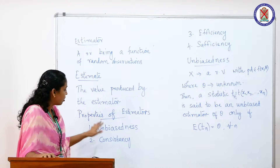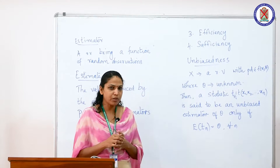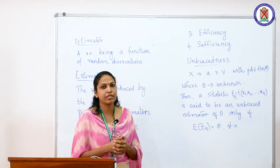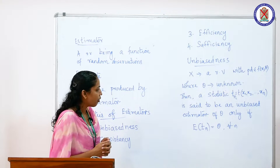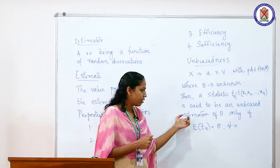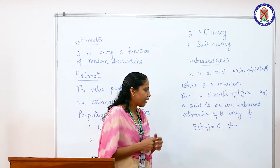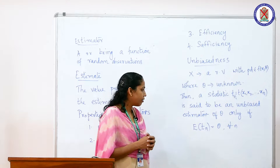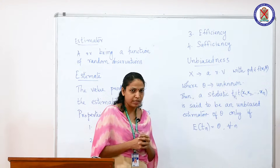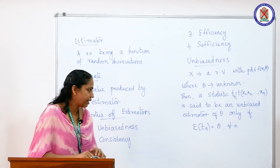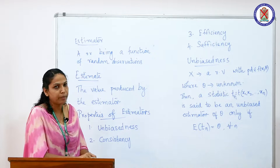Let us first talk about the unbiasedness property. Unbiasedness property says that suppose we have a statistic — a statistic which is a function of the sample values. A statistic is said to be unbiased for a particular parameter theta, if it has a PDF f(x, theta), and only if it satisfies the property that expectation of Tn is equal to theta for all values of n. We say that Tn, which is a statistic, is an unbiased estimator of the parameter theta.